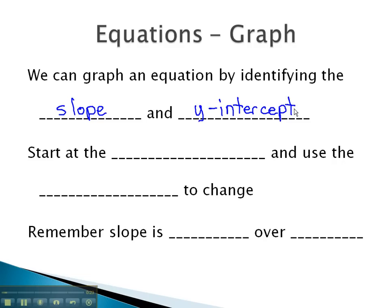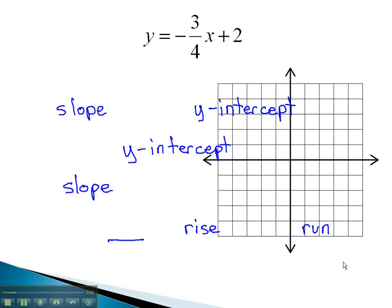Once we have identified this key information, we will start the graph at the y-intercept and then use the slope to change to the next point. As we do, we will remember that slope is found by taking the rise over the run. Let's take a look at an example where we can see the graph found from the equation of the line.